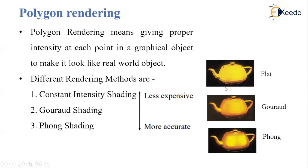As we have seen, constant intensity shading is also called flat shading. Then we make some advancement to introduce Gouraud shading, which looks quite better or more accurate than flat shading. And then to bring more accuracy we bring Phong shading. So in this way these methods are used for polygon rendering. Let's see them one by one.